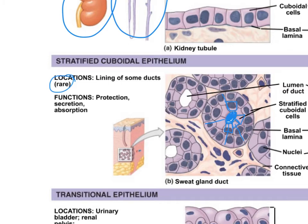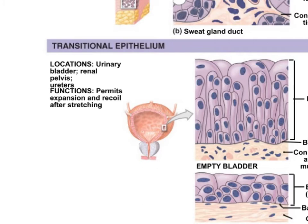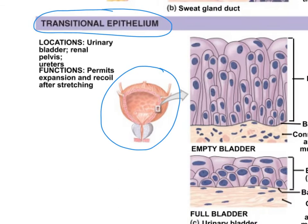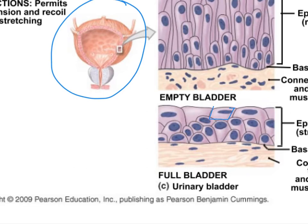Transitional epithelium is named because the cells can stretch. When stretched they look more squamous; when relaxed they look cuboidal — they transition between those shapes. We find this lining organs that stretch, like the urinary bladder. The more urine in the bladder the more it has to stretch to accommodate that fluid.